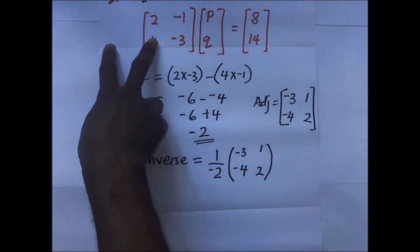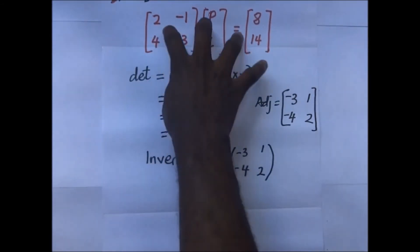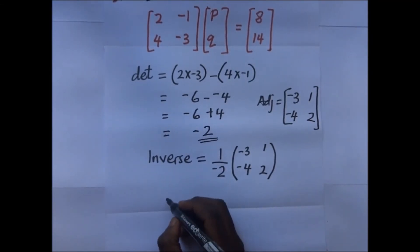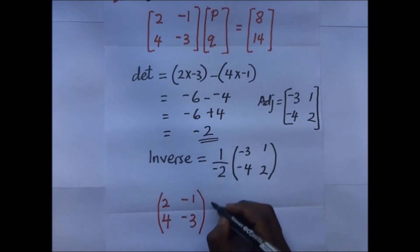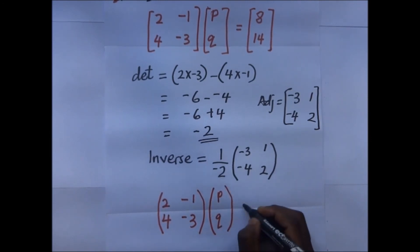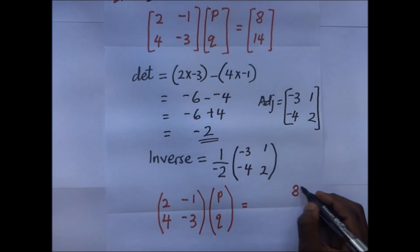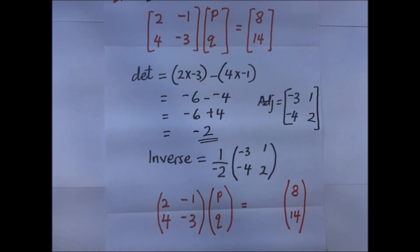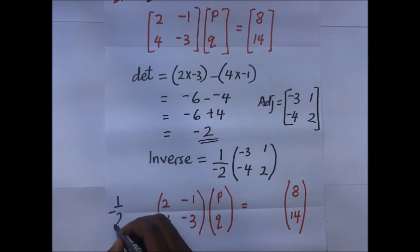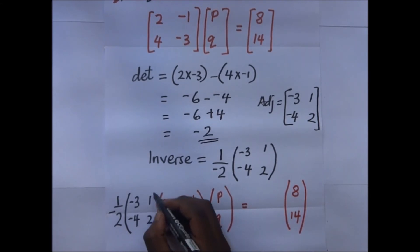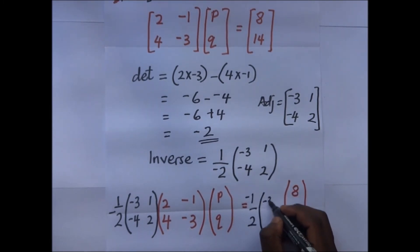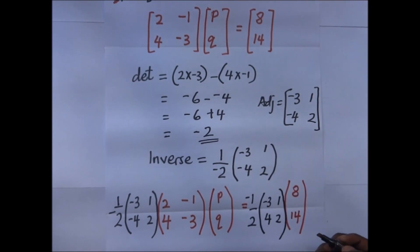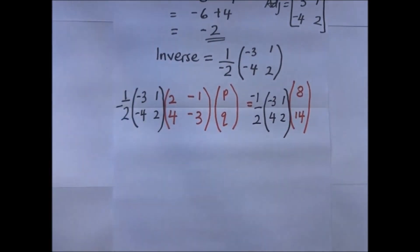We multiply the inverse on both sides of the equation. So (-1/2) × [-3, -4; 1, 2] times the original matrix [2, -1; 4, -3] times [p; q] equals (-1/2) × [-3, -4; 1, 2] × [8; 14]. We carry out the matrix multiplication on the right side to get our values of p and q.